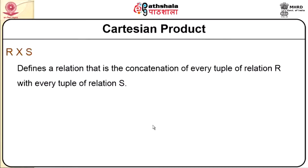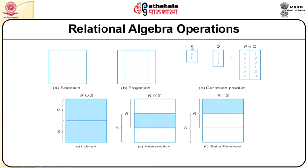The Cartesian product is expressed as a cross between two relations R and S. This defines a relation that is the concatenation of every tuple of relation R with every tuple of S. For example, the cross product between P and Q — if P has rows A and B and Q has values 1, 2, 3 — forms rows A1, A2, A3, B1, B2, B3. So 2 multiplied by 3 creates 6 rows, which is the Cartesian product.